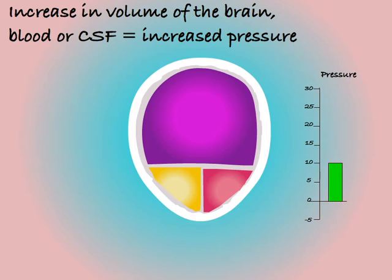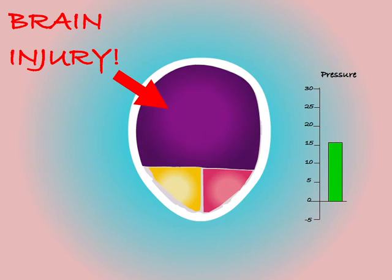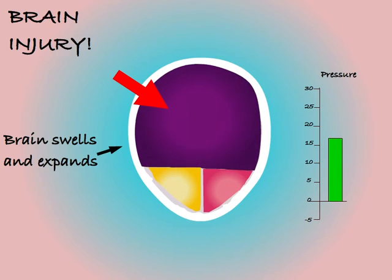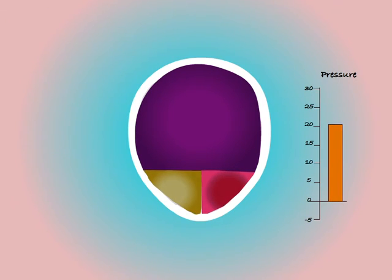For example, if we suffer a bang to the head a potential side effect could be that the brain will begin to swell. As it swells it will quickly fill the limited available space and begin to apply pressure to the blood and the CSF. The pressure inside the skull will begin to increase.